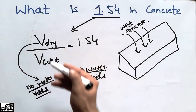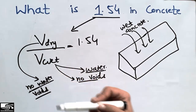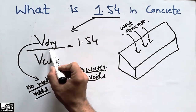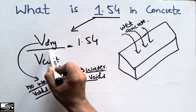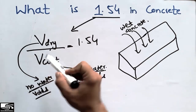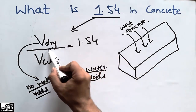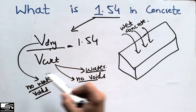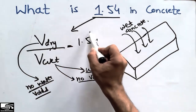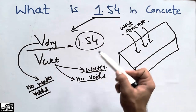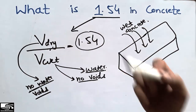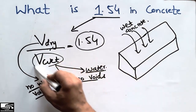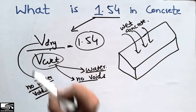When we compare the dry condition volume to the wet condition volume, we find that the volume in the dry condition is more — by a ratio of 1.54. So we multiply this ratio with the wet condition volume to find out the volume of the dry concrete.